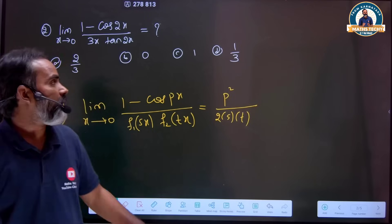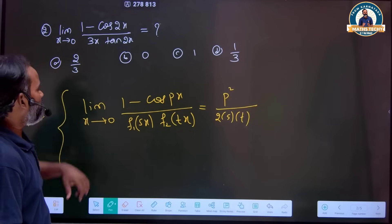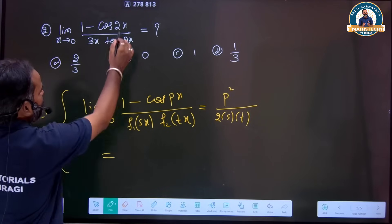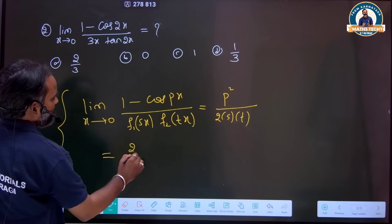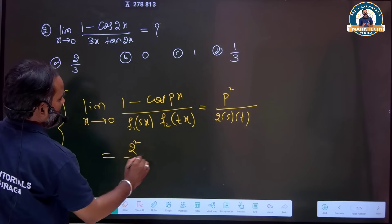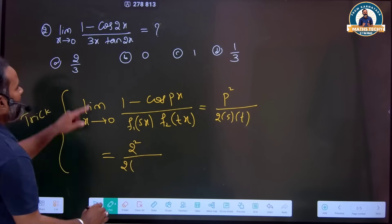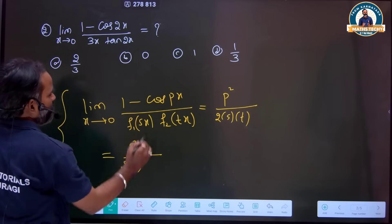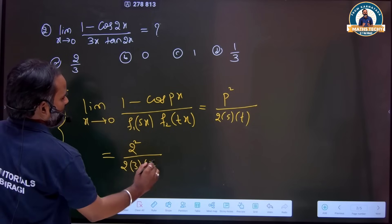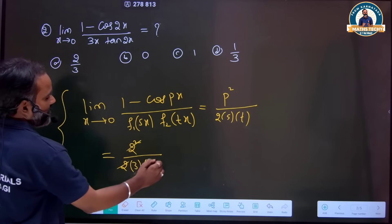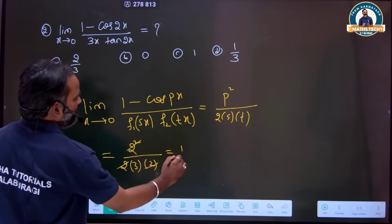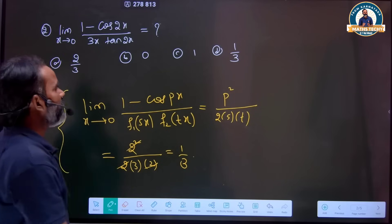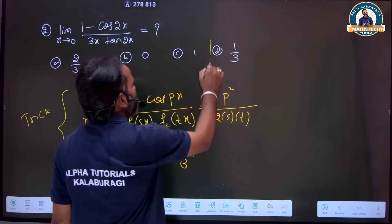So if we have the problem: 2 squared divided by 2, with x-coefficient 3 and x-coefficient 2 — we get 4 divided by... you will get 1 by 3. That is your answer. This is option D.